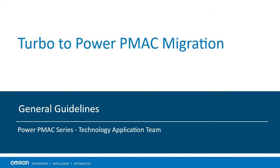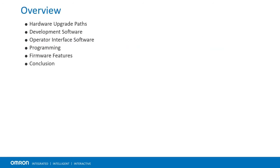In this video, we will cover the process of converting a project from Turbo PMAC to Power PMAC. We will divide this video into five sections followed by a conclusion: hardware upgrade paths, development software, operator interface software, programming, and firmware features.